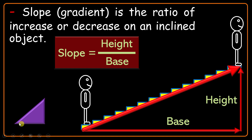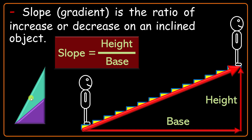Suppose that I put a triangle here, and another one with more slope — larger slope. Why do we say the second one has larger slope? Because if I go from here to here on the base of each triangle, the second one will take me more upwards. This is why we say it has more slope.